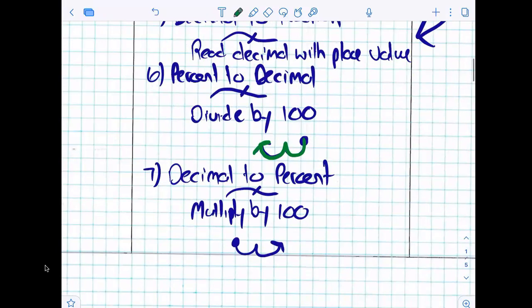How do you go from a decimal to a percent? Multiply by 100. Which is the same as how many bunny hops to the right? Two.